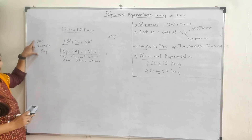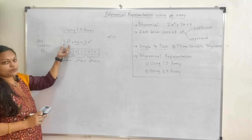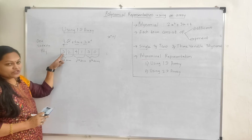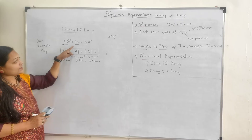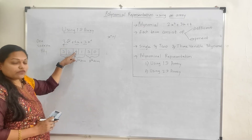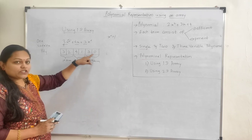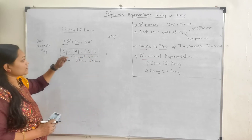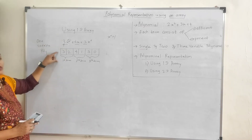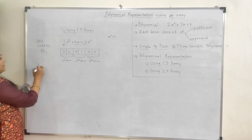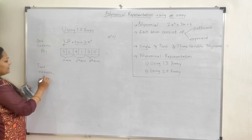For the one variable polynomial, we consider each term and store: first the coefficient of the term, then the exponent of the term. We do this for all three terms — first term, second term, third term. Same way, if a two variable polynomial is there, how can we store it? Let's see. Take one example of a two variable polynomial.